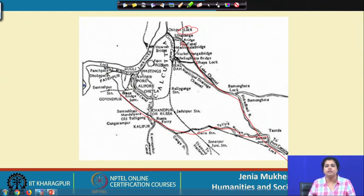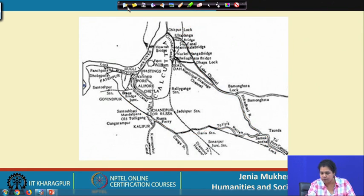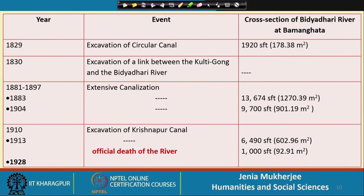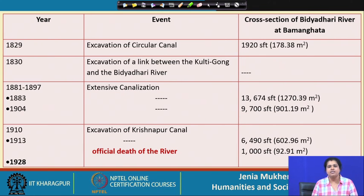This is the technical blueprint of the extensive eastern canal system designed by the British. Another interesting history concerns the transformation in the aquatic environment of the marshes from saline to non-saline. We need to know about the Bidhyadari river and how there was a decline in its flow, and how finally in 1928 it was officially declared as dead.